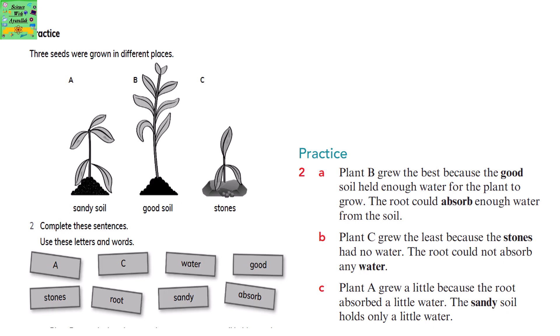Plant B grew the best because the good soil held enough water for the plant to grow. The root could absorb enough water from the soil. Plant C grew the least because the stones had no water. The root could not absorb any water. Plant A grew a little because the root absorbed a little water. The sandy soil holds only a little water.